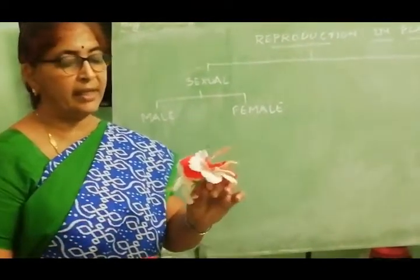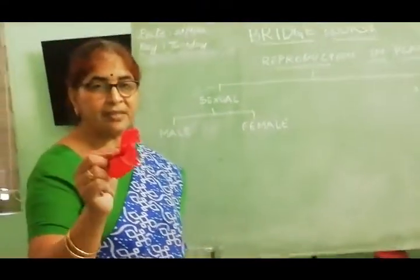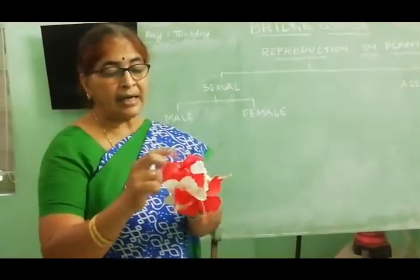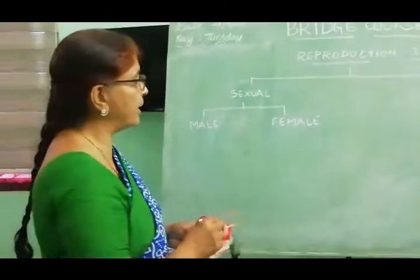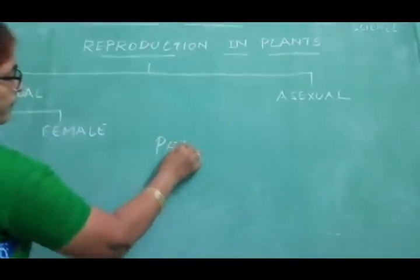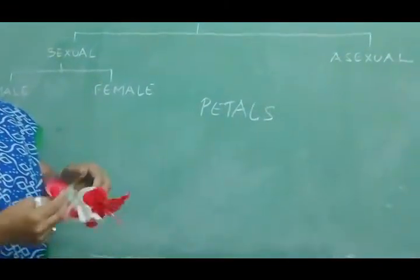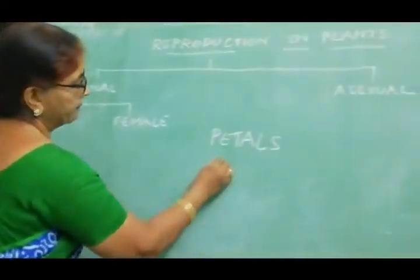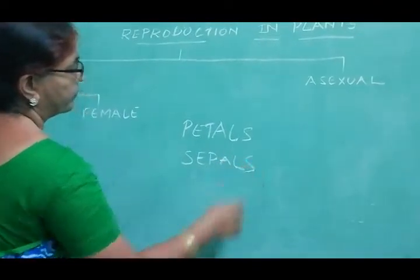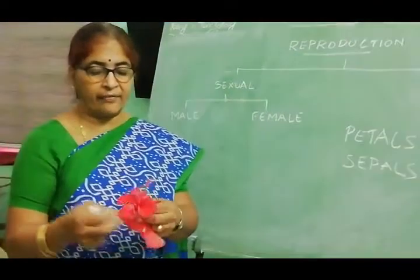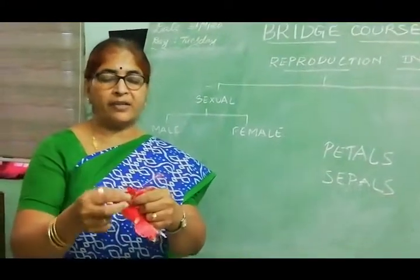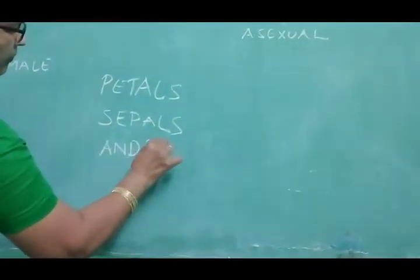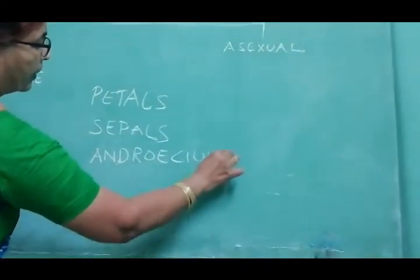Today I have a red flower and a white flower. In this hibiscus flower we have four main parts. The colored leaf-like structures are called petals. These petals are surrounded by the green leaf-like structures called sepals. And inside these two, we have the male and female parts of the flower, which are the androecium and the gynoecium.